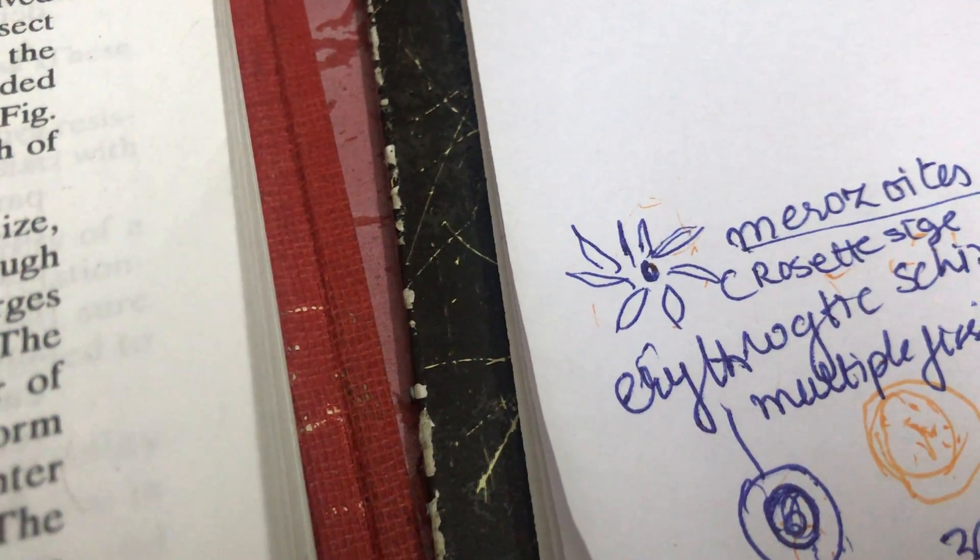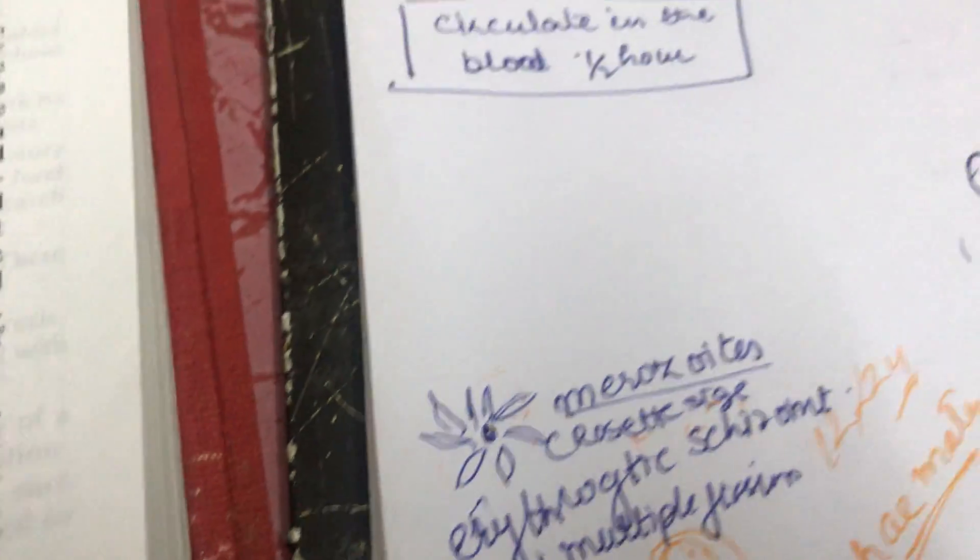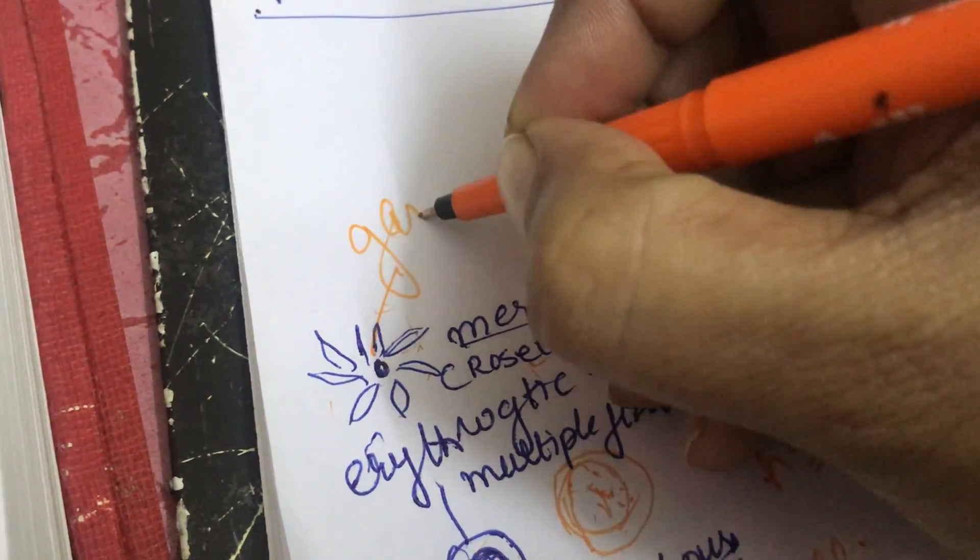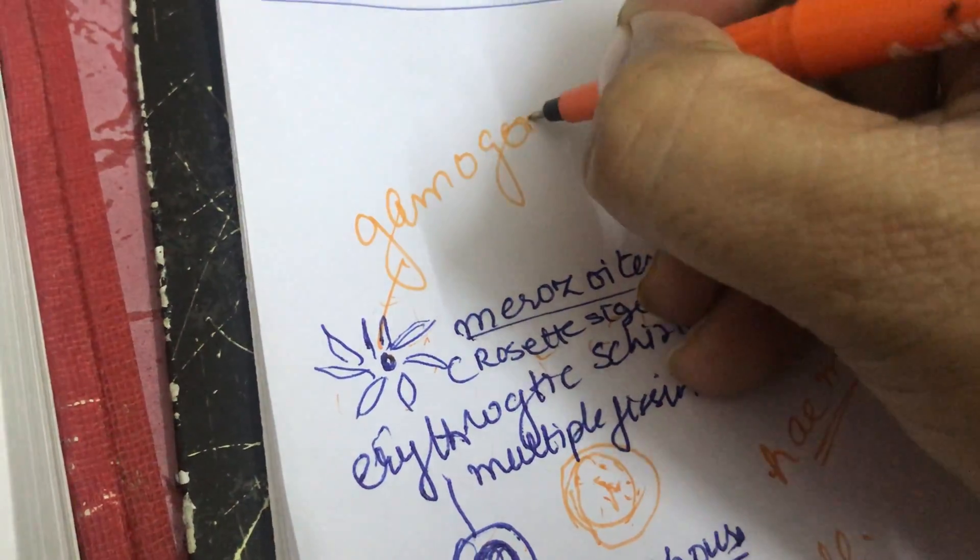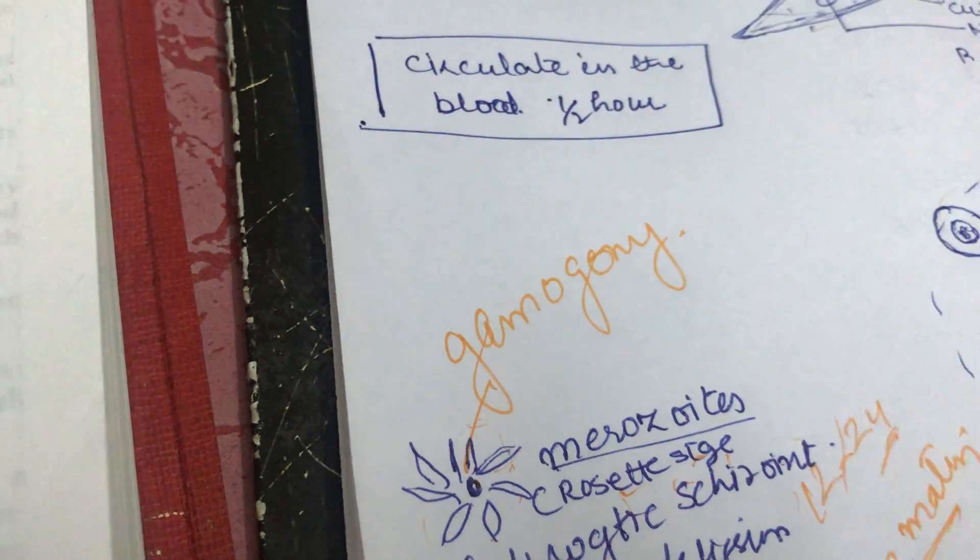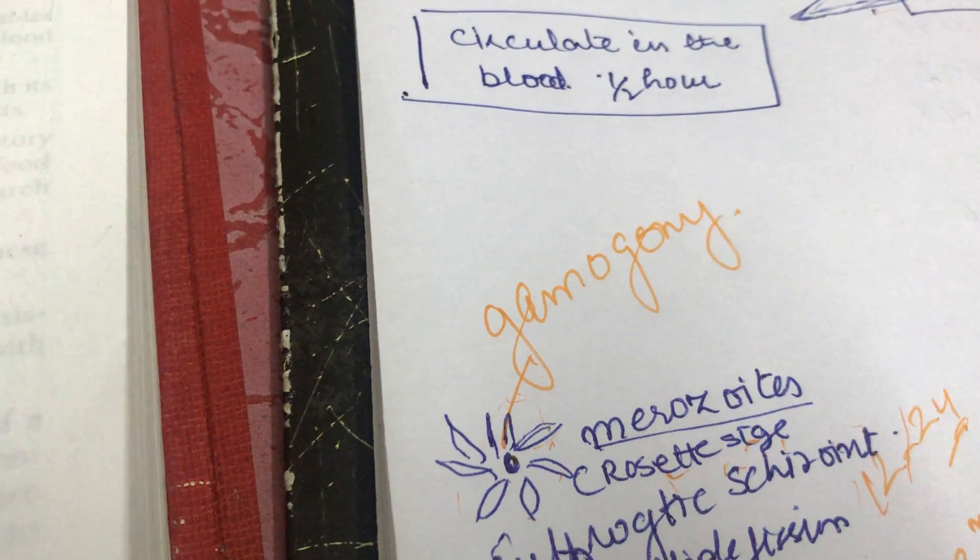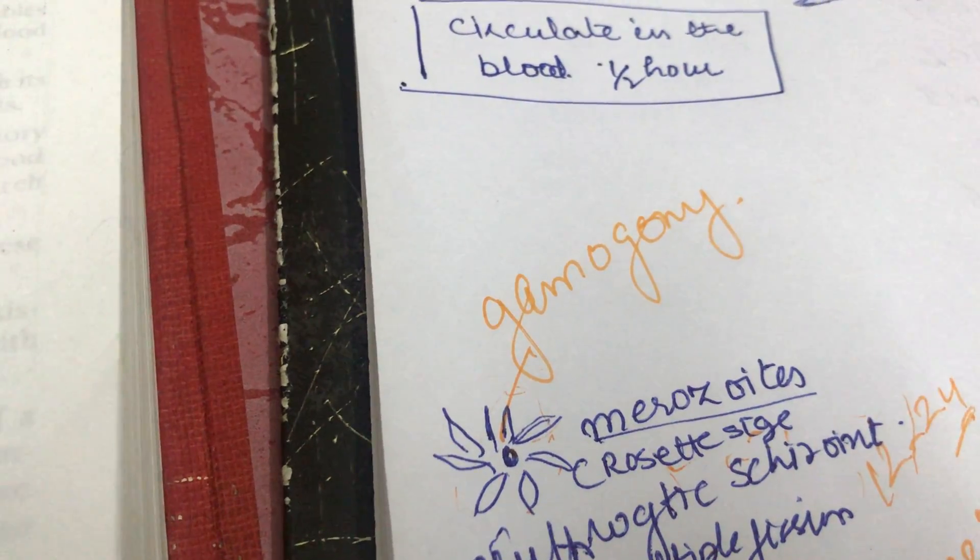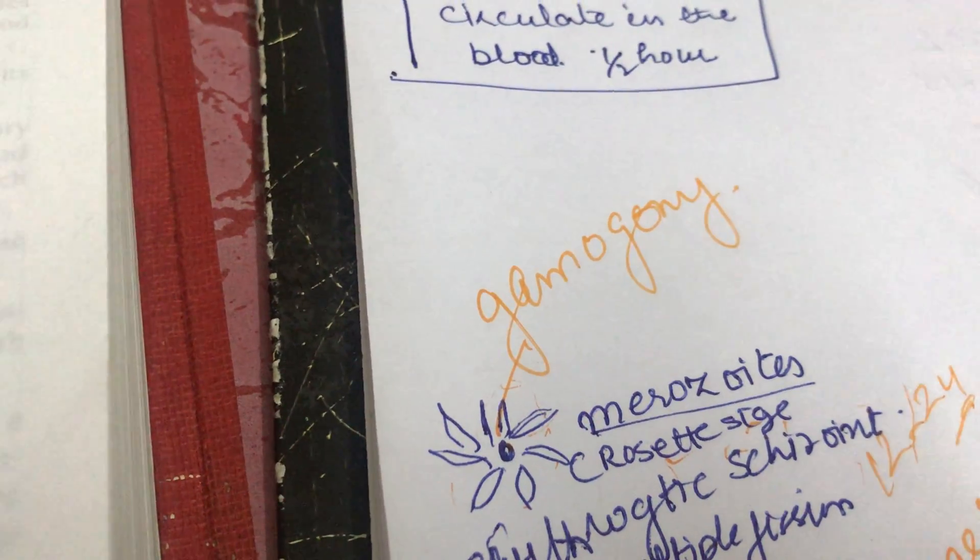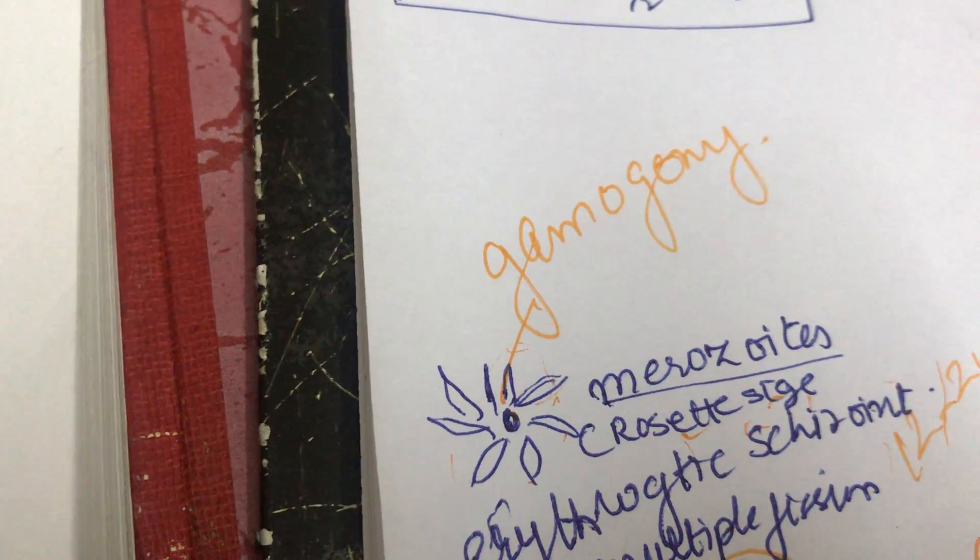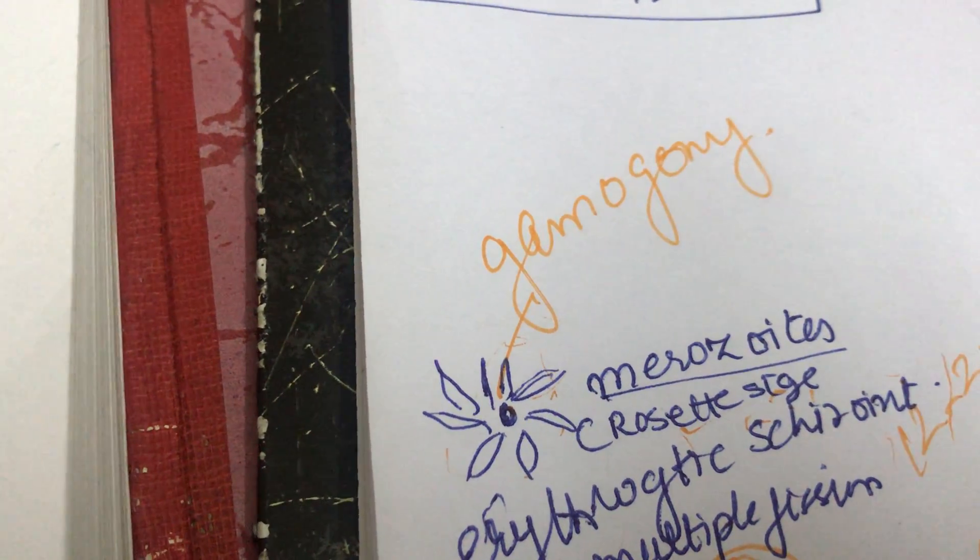The next phase is gamogony. Gamogony starts in the human being and ends in the mosquito. We will start discussing gamogony in our next lecture. Thank you.